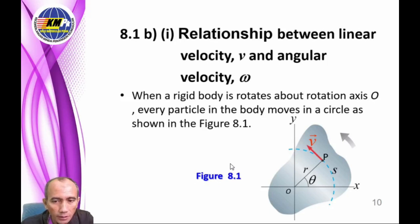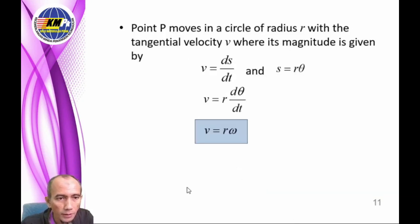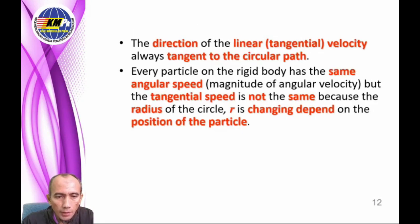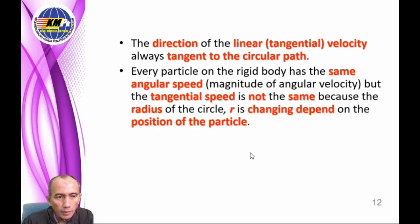Let us see the relation between linear velocity and angular velocity. Based on the diagram, when a rigid body rotates, every particle in the body moves in a circle. Point P moves in a circle of radius R with tangential velocity V, where V equals ds/dt and S equals R theta. So V equals R dθ/dt, giving V equals R omega. Note that the direction of linear tangential velocity is always tangent to the circular path. Every particle on the rigid body has the same angular speed, but the tangential speed differs because the radius changes depending on the particle's position.